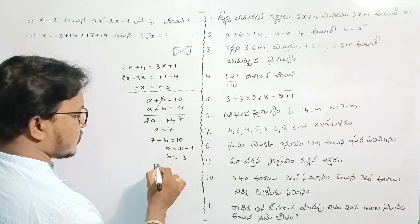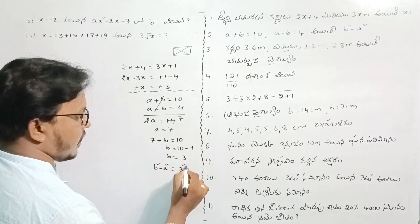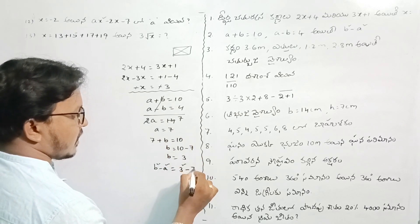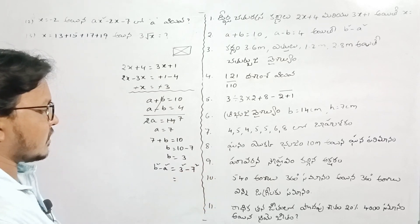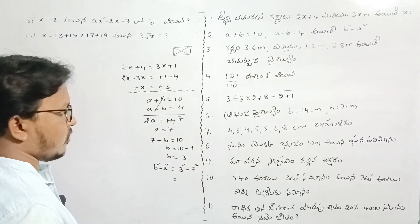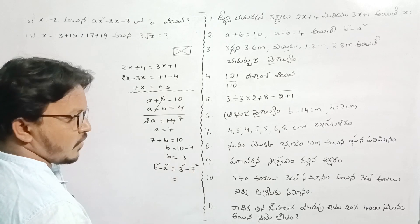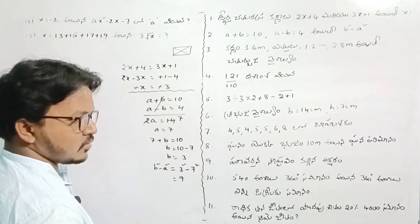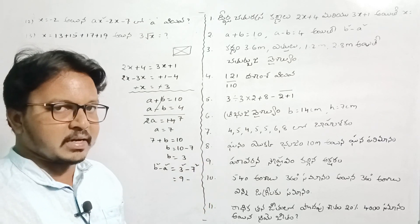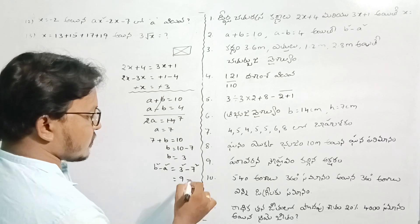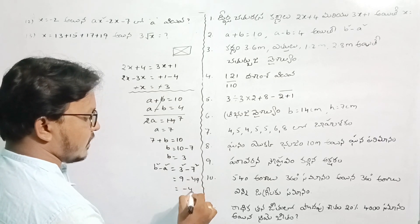A value is equal to 7, B value is equal to 3. What we need to find out is B squared minus A squared. So B squared minus A squared: B squared is 3 squared, A squared is 7 squared. 3 squared is 9, 7 squared is 49. That is equal to 9 minus 49, which is minus 40.